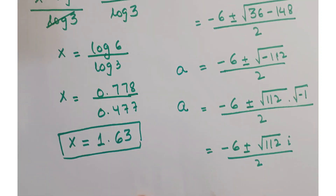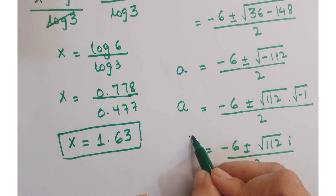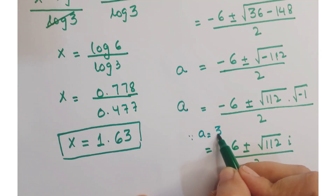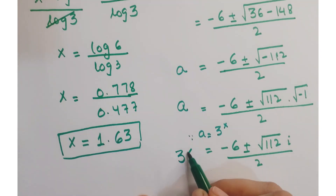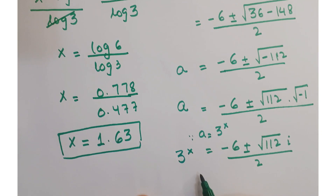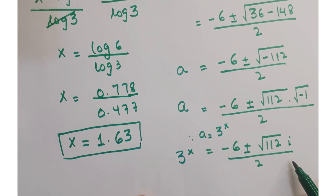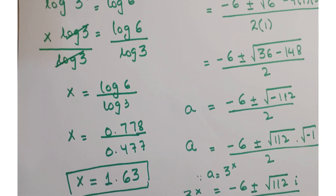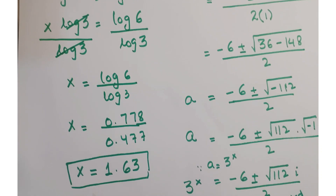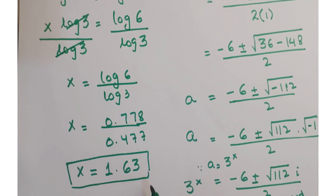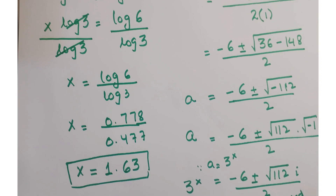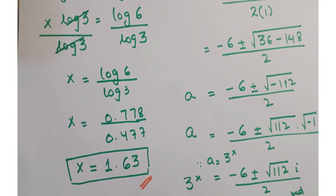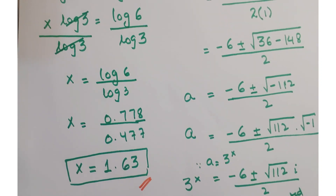This simplifies to minus 6 plus or minus 12i upon 2, which gives complex values. Since a equals 3 to the power x, having an imaginary value is not possible. So we reject this solution as it is not real. Therefore, the solution of x is 1.63, and this is our final answer. I hope you understand it, and if you like it, kindly subscribe to my channel.